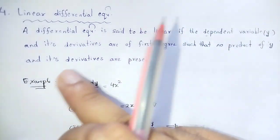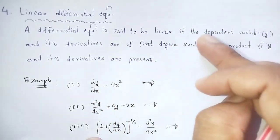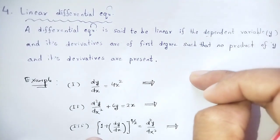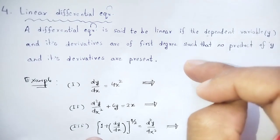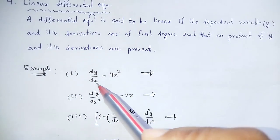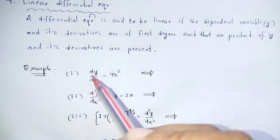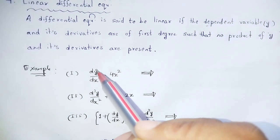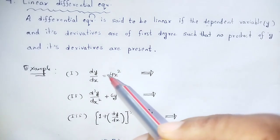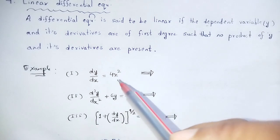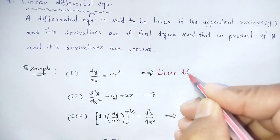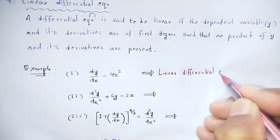Such that no product of y and its derivatives are present. For example: dy/dx = 4x². Here dy/dx is the derivative of the dependent variable y, and 4x² = 0 gives a linear differential equation. This is a linear differential equation.